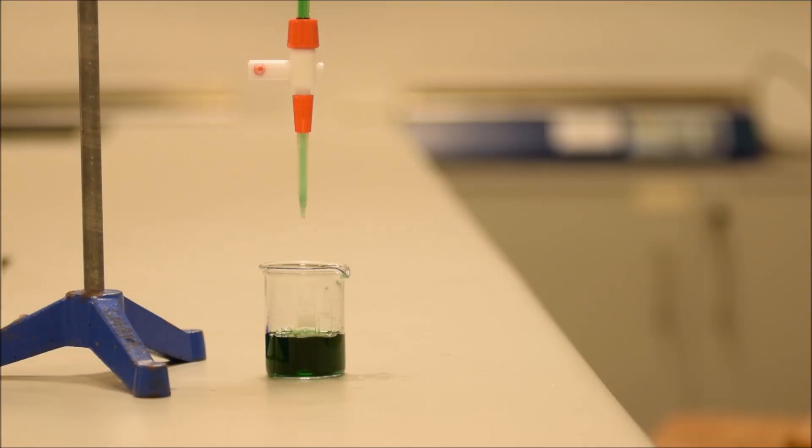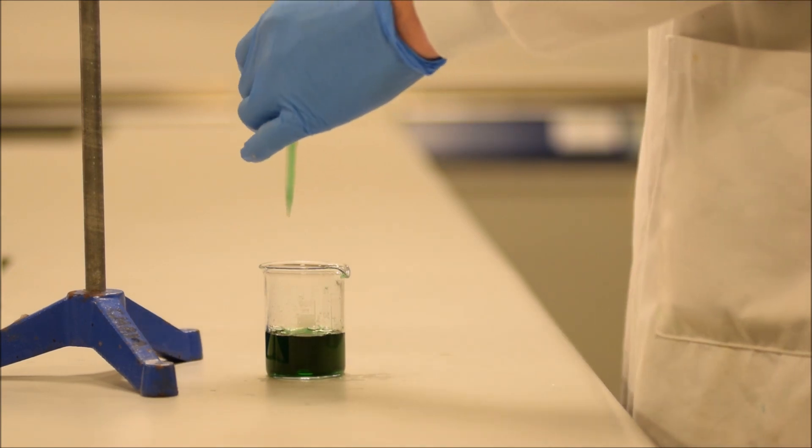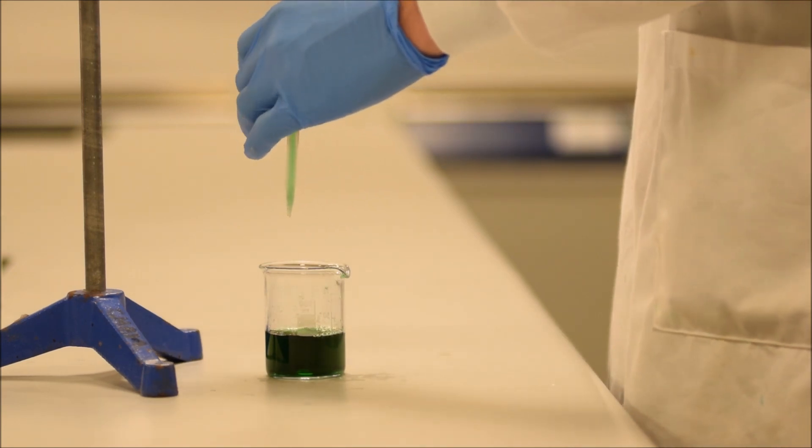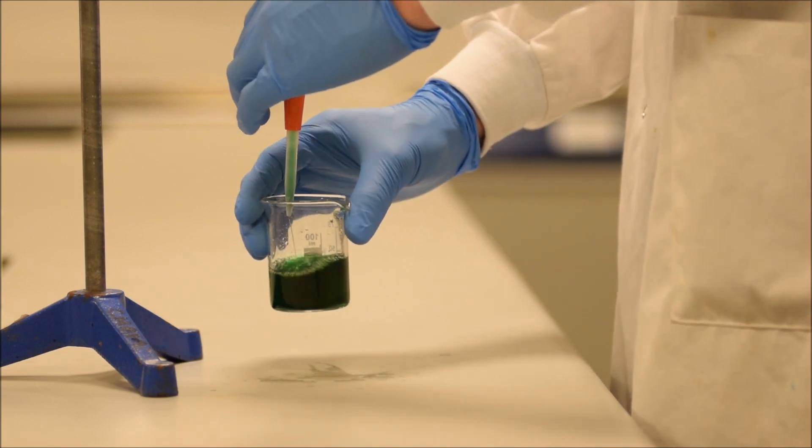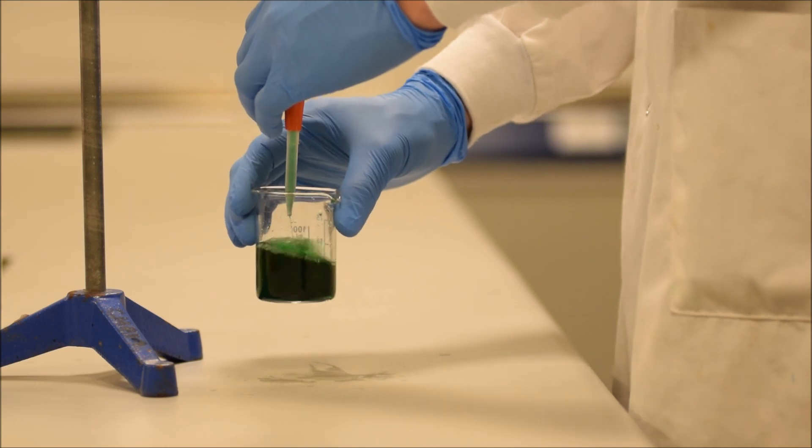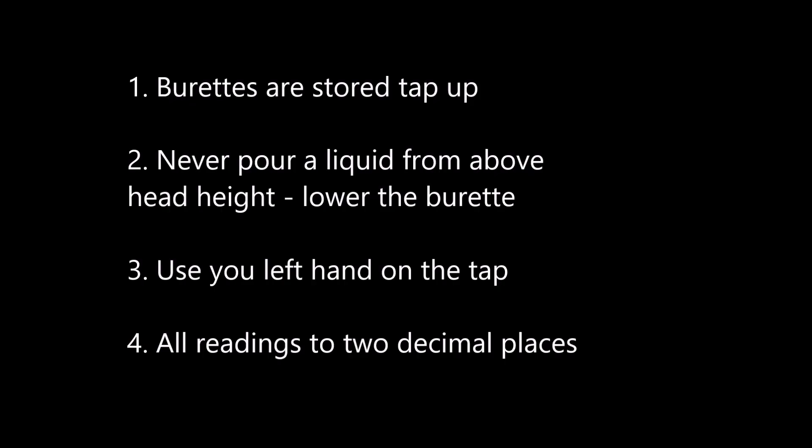It also means that your right hand is free for manipulating other things, and you'll often want to do this if, for example, say you're doing a titration, and you want to mix the flask as it goes, you'll want your right hand, because it's actually quite difficult to mix things with your left hand if you're not left-handed. So rotate the burette, use your left hand to open and close the tap, and then use your right hand to mix the mixture as you add in the material coming out of your burette.